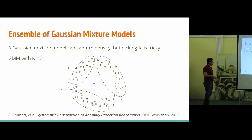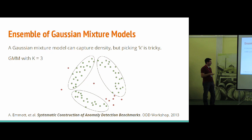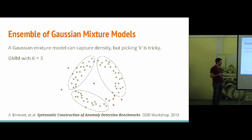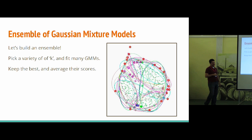There's also the ensemble of Gaussian mixture models, created by Tom Dietrich and Andrew Emmett as part of their DARPA work and benchmarking paper. The idea is to fit a Gaussian mixture model to our data — we have a magic K to pick, so in this case we pick three and fit the Gaussians using EM, and you can see the decision boundaries that fall out. It can work okay if you pick the right K, but who likes that? So instead, we make an ensemble: pick a variety of K values, fit each one with EM, throw out the ones that didn't fit well, keep the better ones, and use that entire ensemble to give us an idea of how regular a point looks.